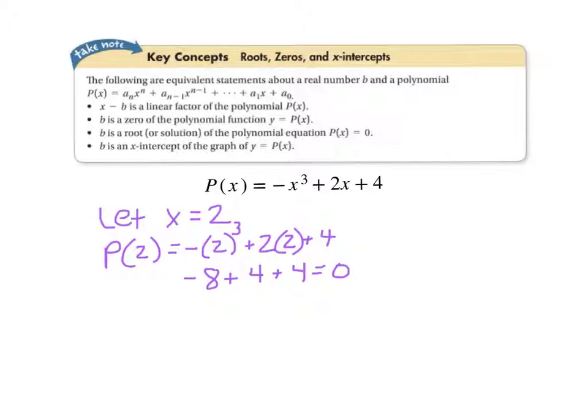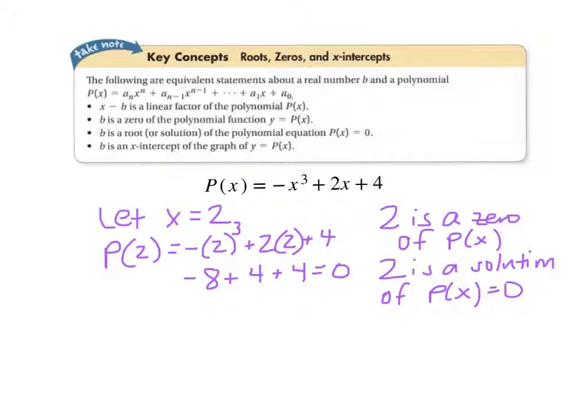That tells us some things. That tells us that 2 is a zero of the function P(x). And the fact that that's a zero, 2 would be a solution of the equation where P(x) equals zero. The ordered pair (2, 0), that's the x-intercept of the function. And x minus 2, that is a factor of the function. So that's the interrelationship between all of these different parts. The factor x minus 2 corresponds to a zero of 2, and a solution to the polynomial equation of 2, and the ordered pair (2, 0) as the x-intercept of this polynomial.